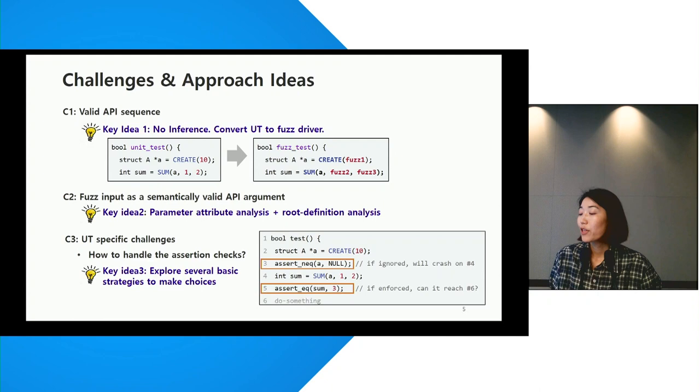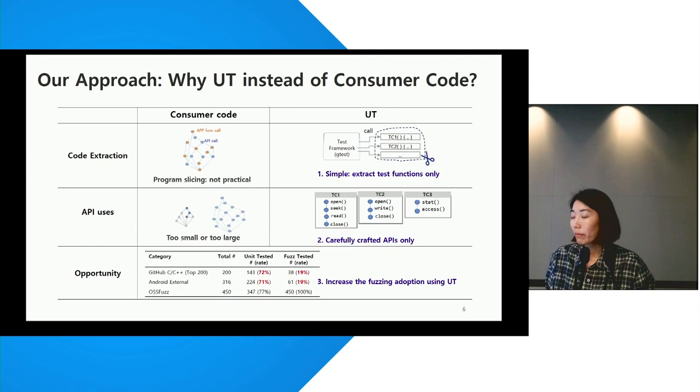On the other hand, the validation check on line five is difficult to pass if the input values on line four are other than one and two. This raises the question of whether to keep all assertions or completely ignore them. To answer this, we conducted experiments to better understand how the assertions are used in UT and how they affect fuzzing.